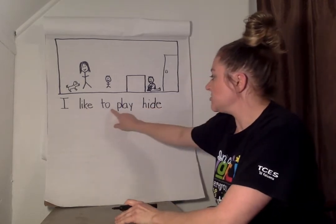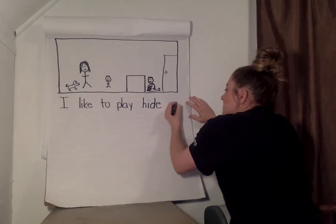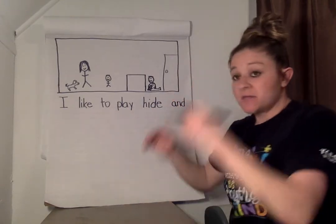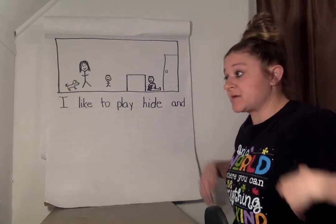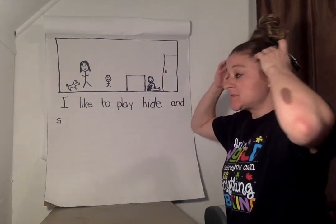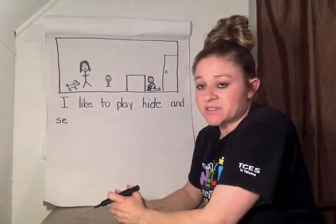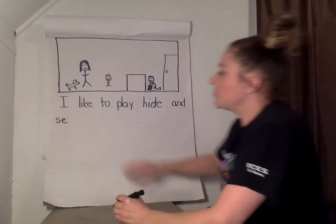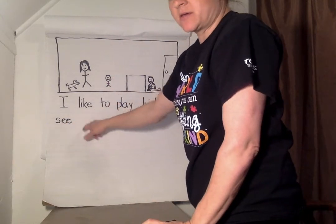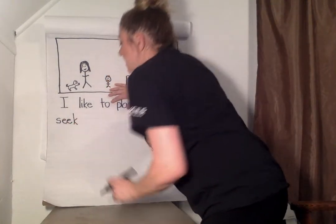Let's reread. I like to play hide — and 'and' is a sight word. A-N-D. Spell with me: A-N-D. I like to play hide-and-seek. S-E-E-K. Seek. S-E-E — we know E usually says its short sound, but we want it to say its name in this case. So I'm going to put another E there to make the E say its name. S-E-E-K — it's either a C or a K. We're going to put a K there.